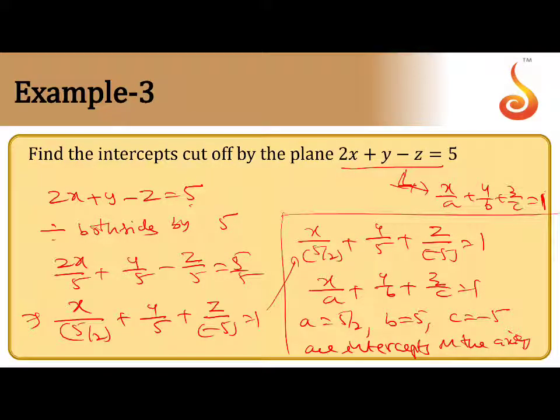So the answer is: 5/2, 5, and -5 are the intercepts of the plane on the coordinate axes.